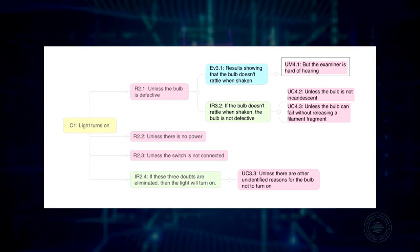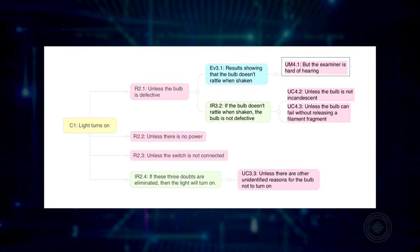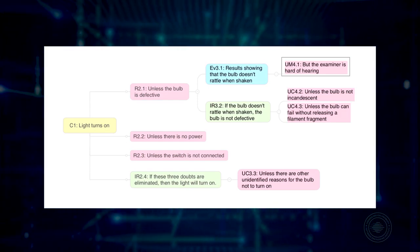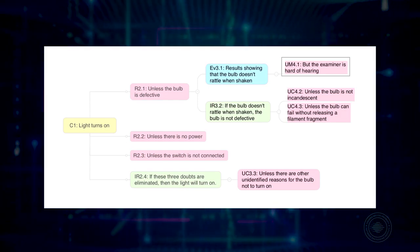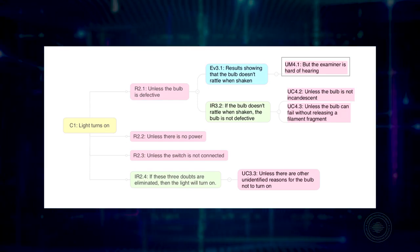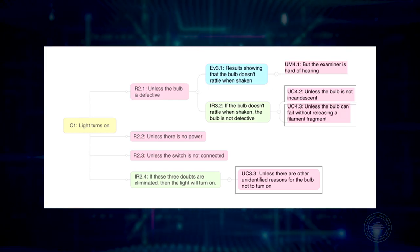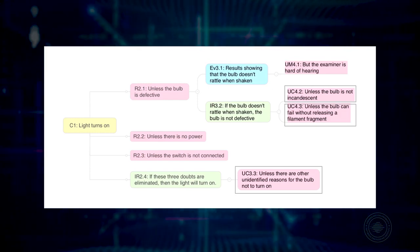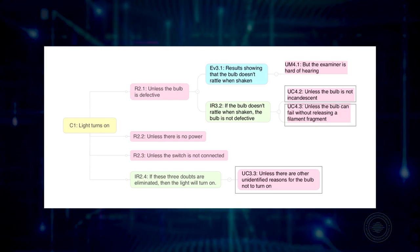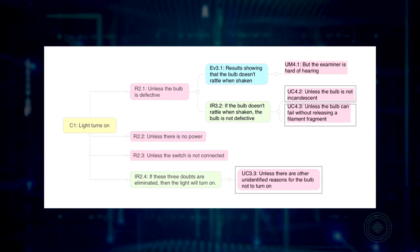Doubts about evidence — for example, his hearing might not be good enough to hear the dead bulb rattle. And doubts about inference — for example, shaking the bulb might not be a good way to determine if it's burnt out.